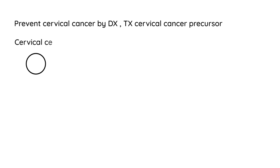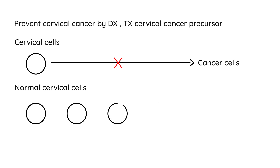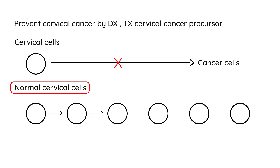When you have a cervical cell, it doesn't go directly to becoming a cancer cell in one shot. What happens is a normal cervical cell will go through several stages before it ends up as a cancerous cell. These stages are described in a lot of terminology. There's ASCUS — atypical squamous cells.